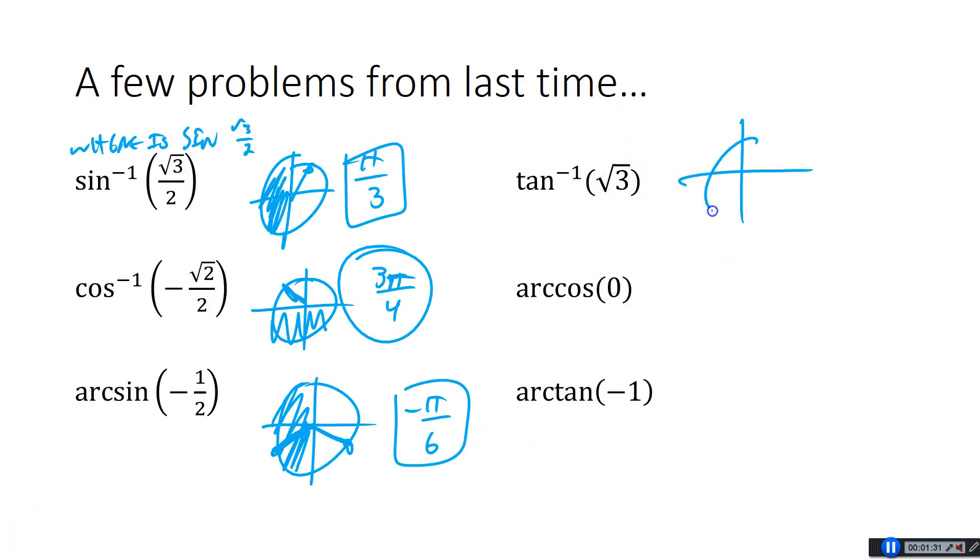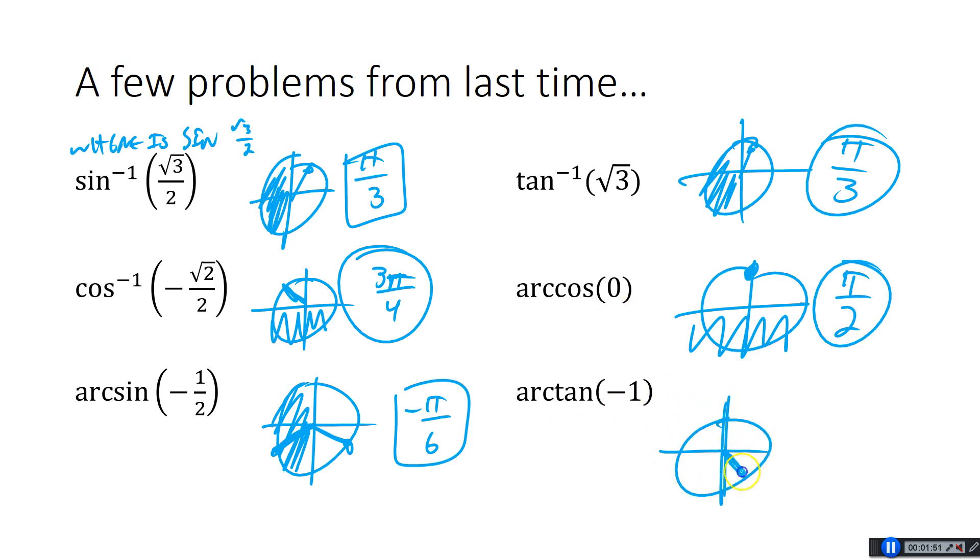Tan inverse of root 3, so it's on the right side of the circle. Root 3 happens up here at π over 3 as well. Arc cosine of 0, so where is cosine 0 on the top half of the circle? Cosine is the x-coordinate, so we've got to be on the y-axis, so it must be up here at π over 2. And then arc tan of negative 1, so that's tangent inverse of negative 1. Tangent is negative 1 at the 45 right here on the right side of the circle. That's going to be at negative π over 4. Awesome.